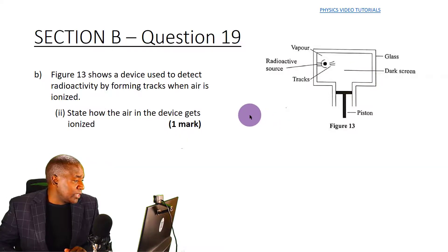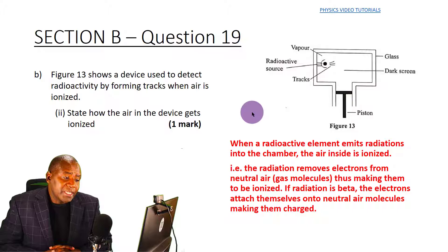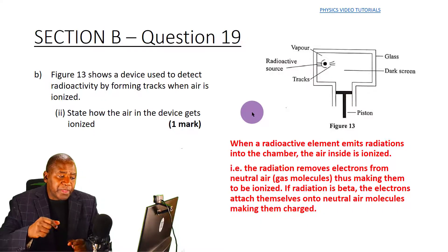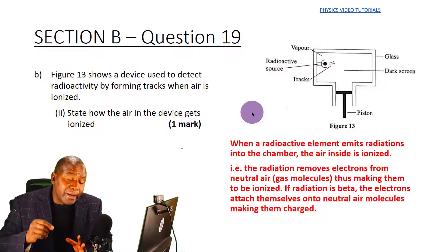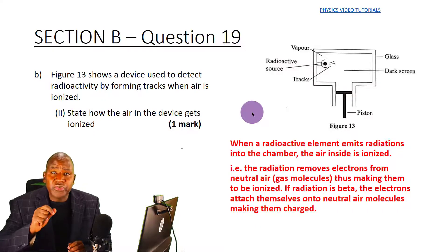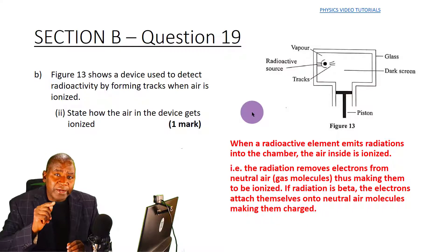The question asks how the air in the device gets ionized. When the radioactive element emits radiation into the chamber, the radiation removes electrons from neutral air molecules, making them ionized. When a neutral air molecule loses an electron, it becomes positively charged; when it gains an electron, it becomes negatively charged.